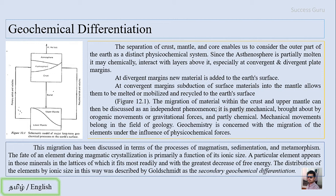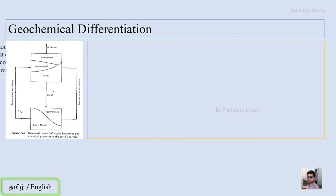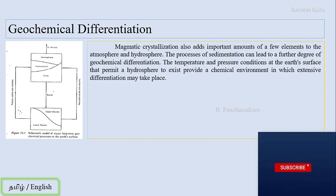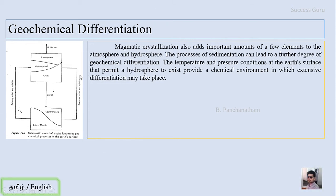This distribution of the elements by ionic size was described by Goldsmith as the secondary geochemical differentiation. So according to the ionic size, the elements have been distributed, and this type of distribution is called the secondary geochemical differentiation. The magmatic crystallization also adds important amounts of a few elements to the atmosphere and hydrosphere. When there is a magmatic eruption or formation of igneous rock as basaltic flow, there will be release of gases called volatiles.